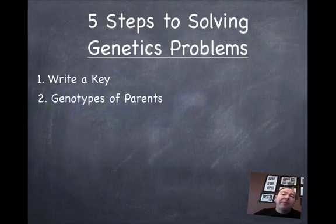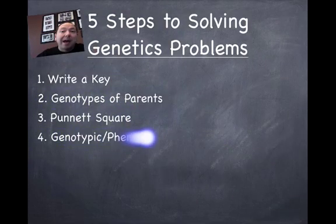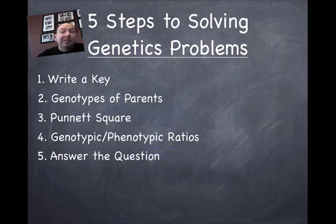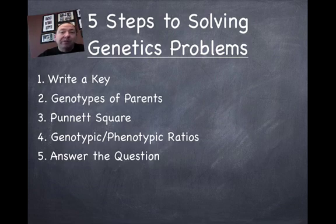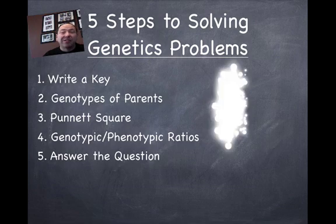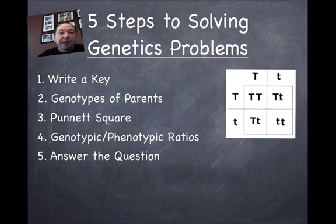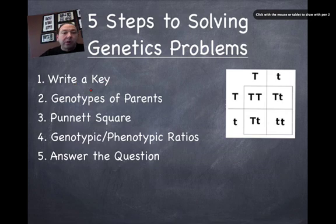What I think would be helpful here is to go over the five steps of solving any genetics problem. I've worked these up as a checklist for students to go through in order to solve any type of genetics problem. If you follow these steps, I think you'll find a lot more success. So here I have an example of a Punnett square, and the first thing we want to do is write a key.